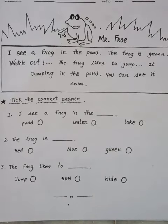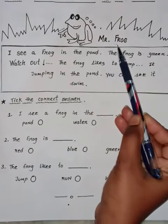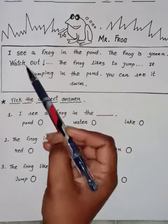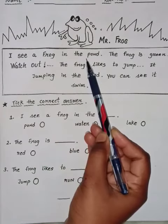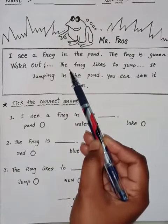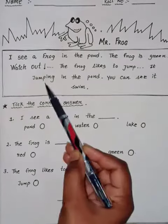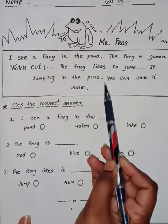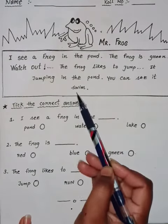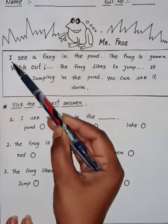Hello everyone, students. Today we are going to do an activity in English subject. This is Mr. Frog. I see a frog in the pond. The frog is green. Watch out — the frog likes to jump. It is jumping in the pond. You can see it swim.